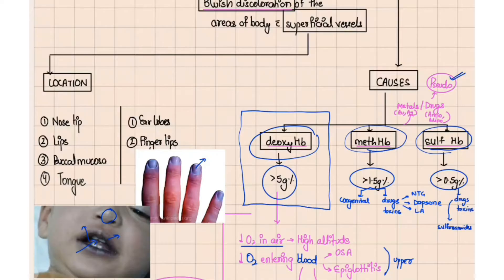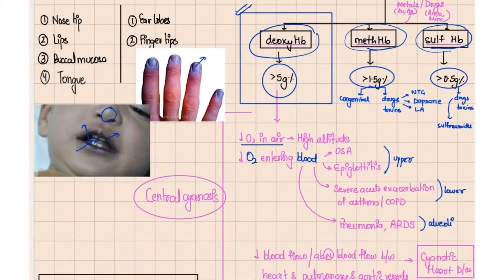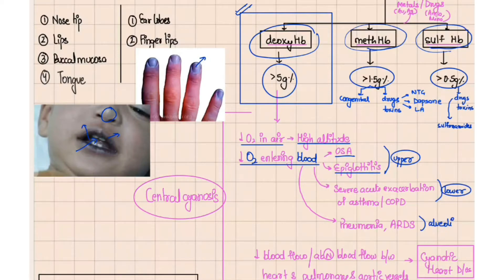The main and most common cause of blue discoloration is always deoxyhemoglobin. There can be various causes for this, starting from decreased oxygen in the air — such as at high altitude due to decreased partial pressure of oxygen — or various airway causes like upper airway obstruction in obstructive sleep apnea or epiglottitis, lower airway obstruction in severe acute exacerbation of asthma or COPD, or alveolar pathology like pneumonia or ARDS.